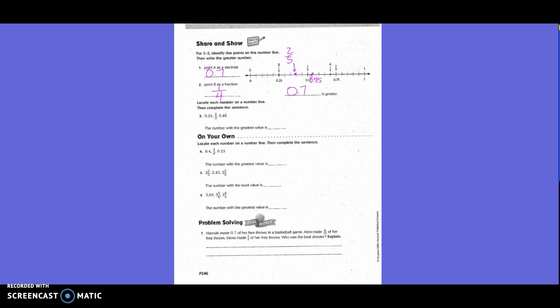And then we have 46 hundredths. So where would 46 hundredths be? Just a little bit past this tick mark that's 45 hundredths. So the number with the greatest value is 55 hundredths.